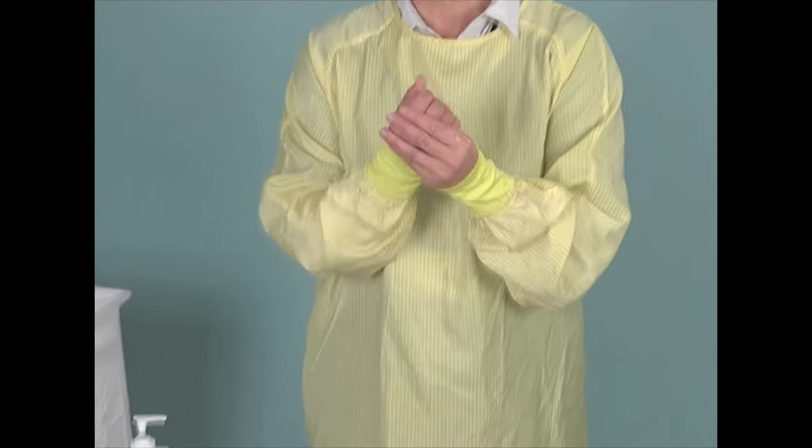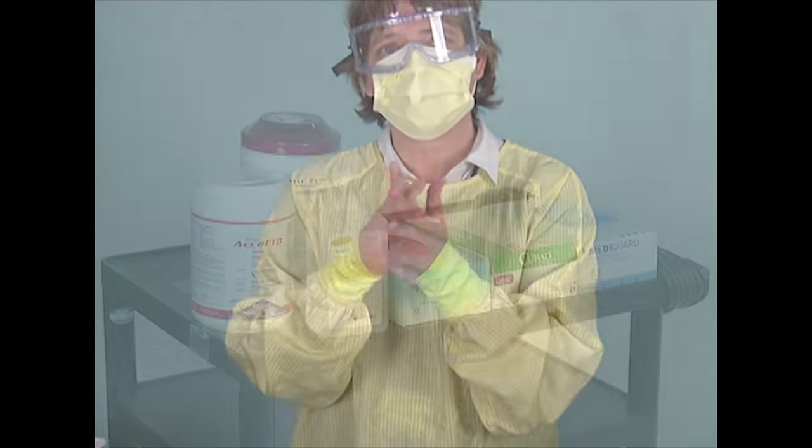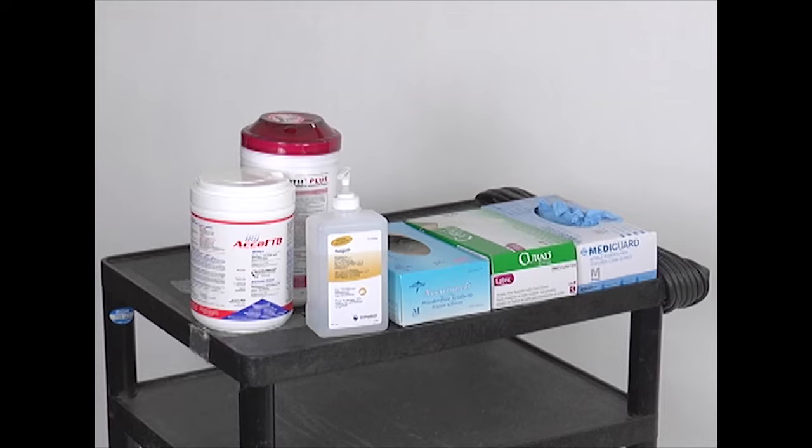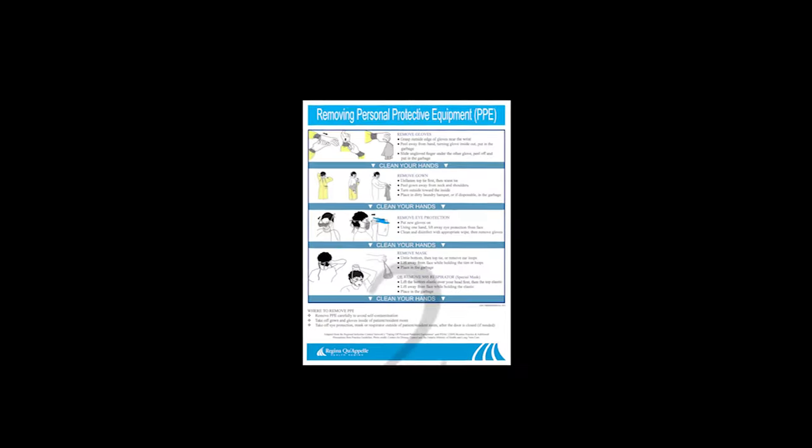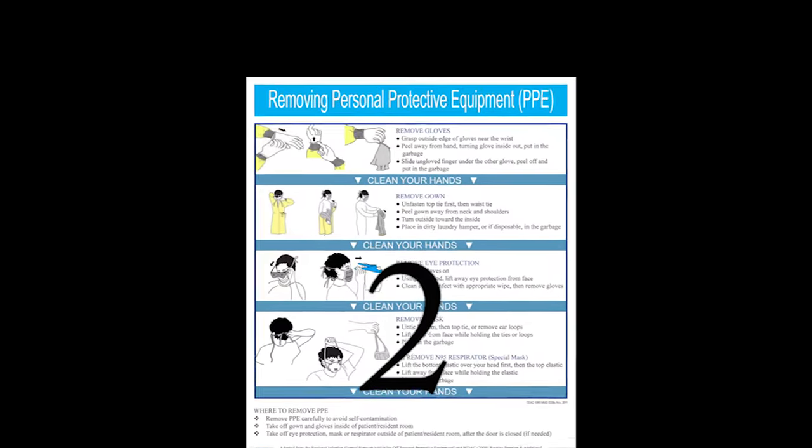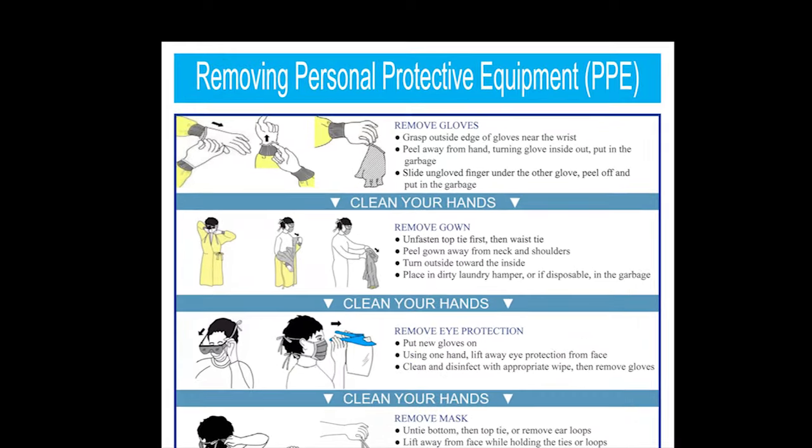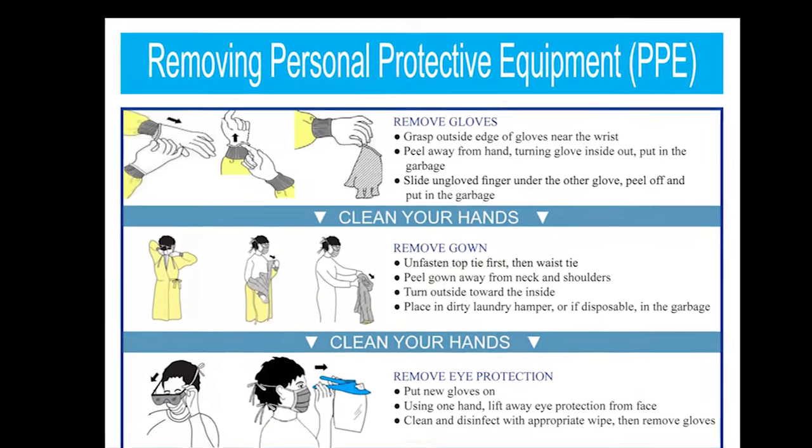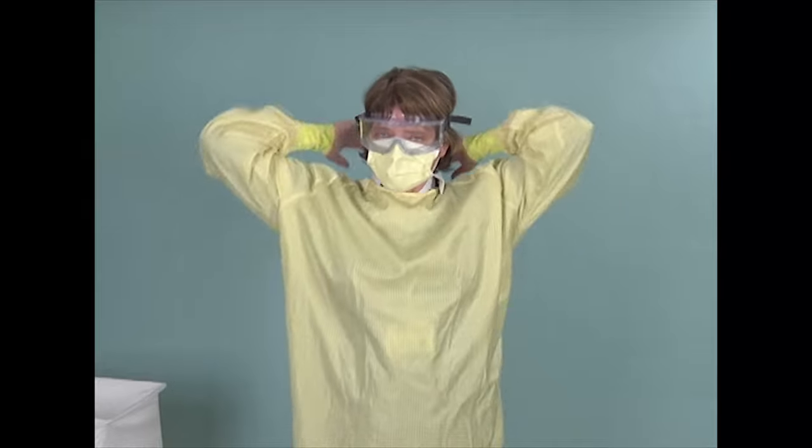You need to be careful taking the gown off. You do not want to be near the clean supplies in the anti-room or the hallway with the dirty gown on. You don't want to be on the other side of the bed. You want to be near the door ready to go. There should be Isagel, laundry hamper and a garbage container there for your use.